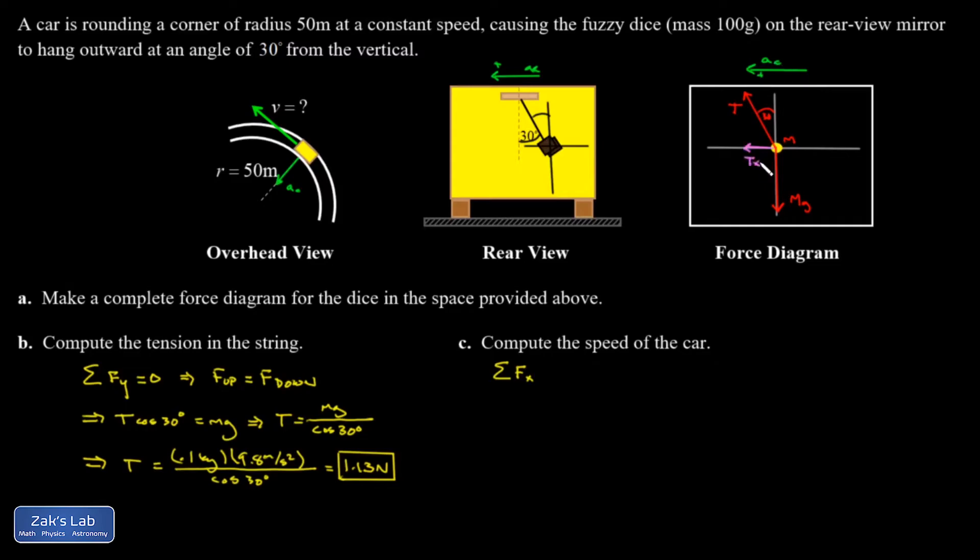And I'm going to call that the positive direction. And then I have to ask what force could possibly be responsible for that. And it looks like that tension has a horizontal component pointing to the left. That's the only thing pointing horizontally. So that's what causes the horizontal acceleration. And then, of course, that acceleration is related to v. It's v squared over r. So that looks promising for getting the speed of the car.